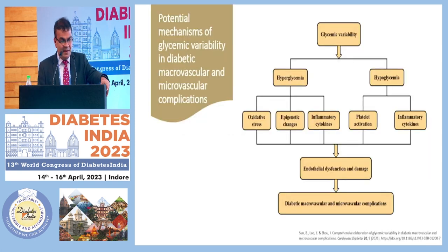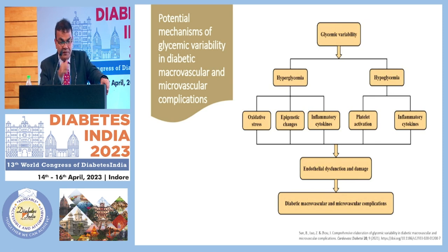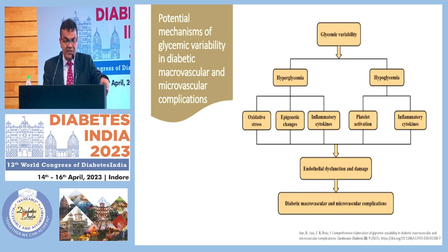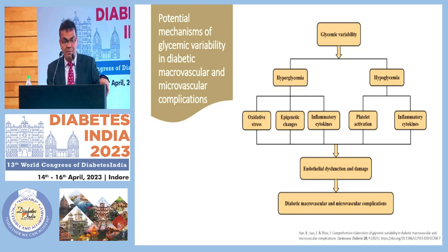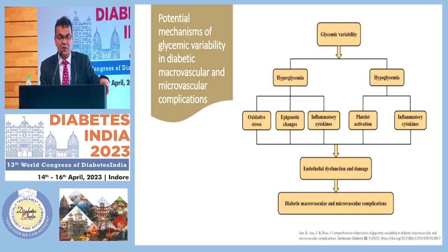What is the potential mechanism of glycemic variability? Both hypo- and hyperglycemia lead to increased oxidative stress, epigenetic changes, inflammatory cytokines, and platelet activation. These all make a person more prone to endothelial dysfunction and damage, which leads to diabetic microvascular and macrovascular complications.